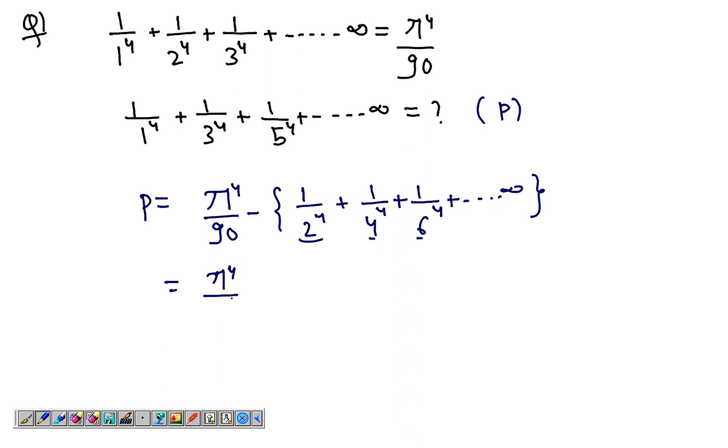Now, if I take out 1 over 2^4 out common, what I get here is 1 (which can be written as 1 over 1^4), plus 1 over 2^4 (since 2^4 is already out common).